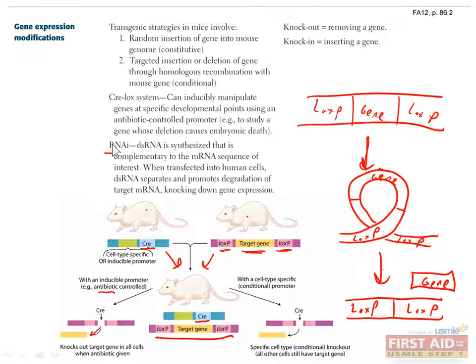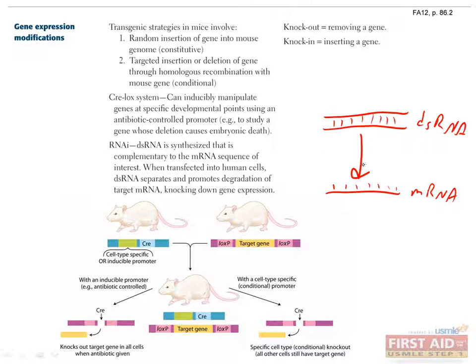The last method of gene expression modification that I'll cover is called RNAi, or RNA interference. This method targets mRNA rather than the DNA to block gene expression. You can do this by making double-stranded RNA which is complementary to the mRNA you're trying to block, and transfecting this double-stranded RNA into cells. It'll stick to its complementary mRNA, and cells will recognize this as unnatural and possibly dangerous, and will degrade the RNA that's involved so that it won't be translated.